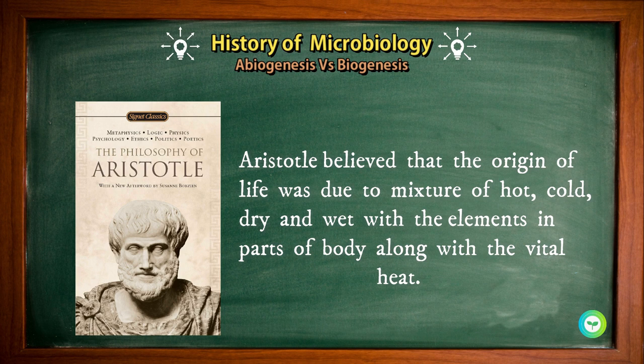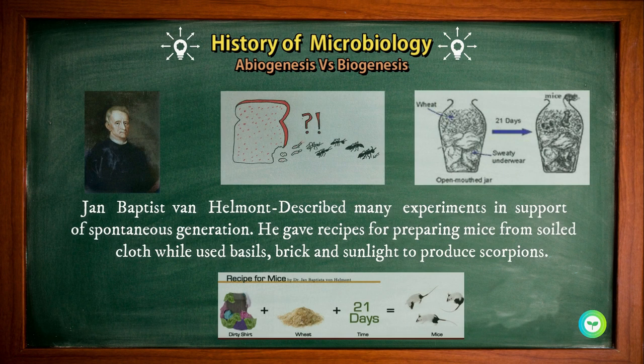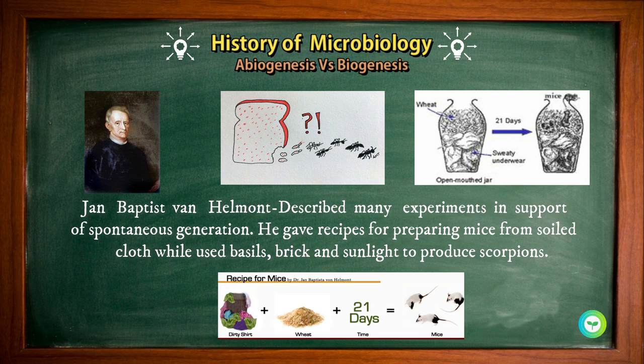Aristotle believed that the origin of life was due to a mixture of hot, cold, dry, and wet elements in the part of the body, along with the vital heat. Jan Baptist Von Helmont described many experiments in support of spontaneous generation. He gave recipes for preparing mice from soiled cloth, and used basil, brick, and sunlight to produce scorpions.